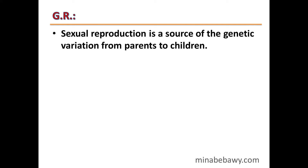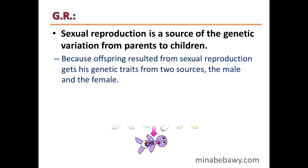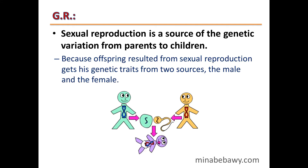Sexual reproduction is a source of genetic variation from parents to children, because offspring from sexual reproduction inherit genetic traits from two sources — the male and the female. Part of the traits comes from the father and the other part from the mother.